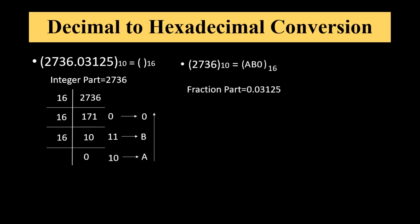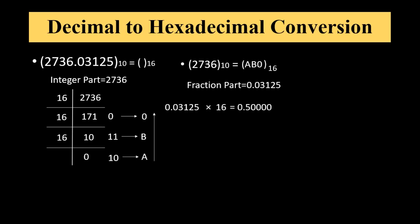Now the fractional part is 0.03125. It will be multiplied by 16 continuously and we have to record the integer value each time. The integer value in the forward order gives the required hexadecimal number. So 0.03125 multiplied by 16 gives 0.50, and the integer value here is 0.